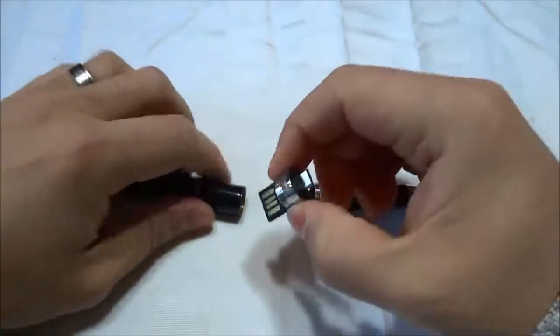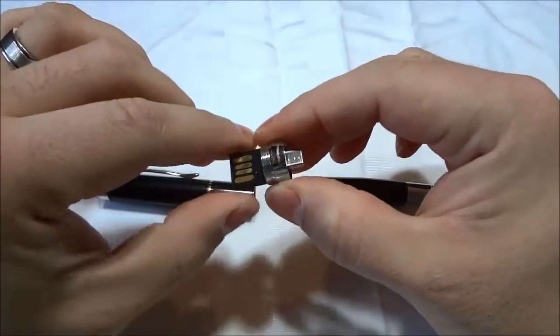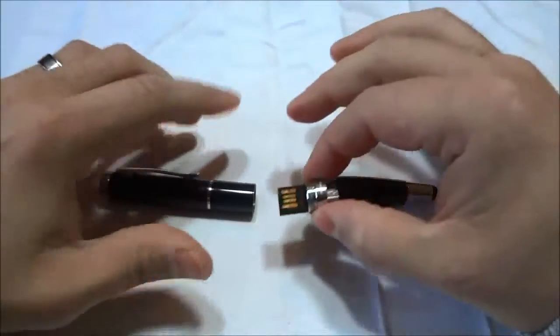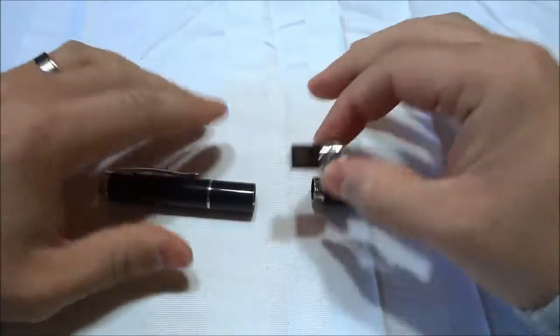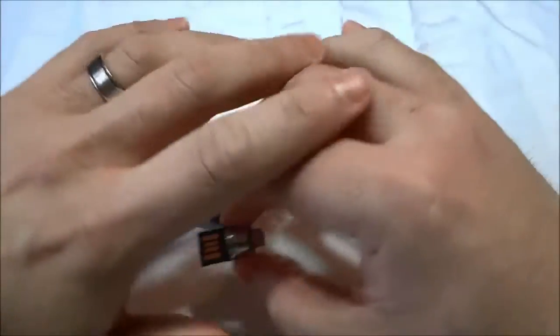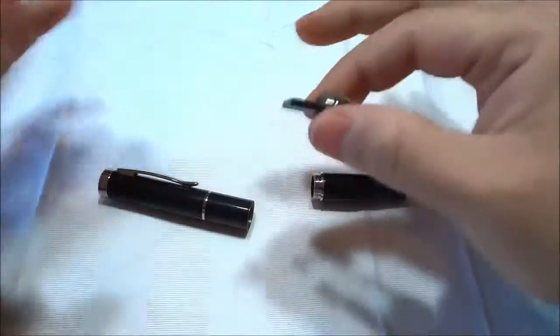So you can see right here, this is stored within the center column of the pen. This is a 32 gigabyte OTG flash drive. It is extremely convenient and it is literally stored inside of the center column of the pen. You will not even notice or know that it's there unless you actually take it out.